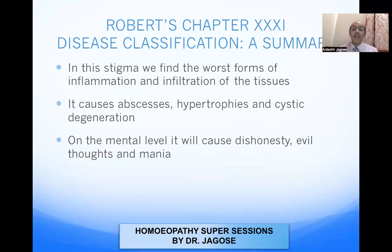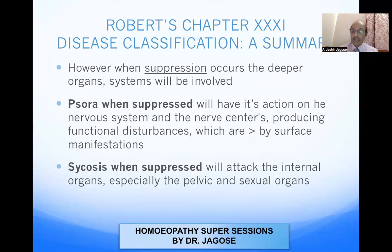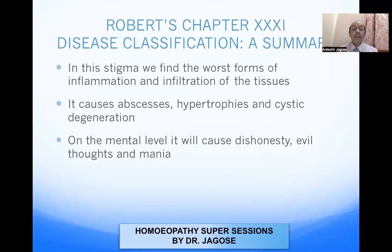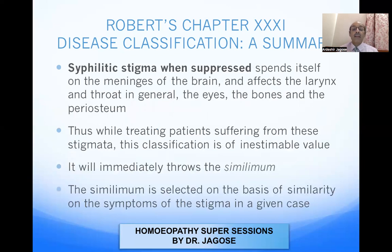In the Sycotic stigma, we find the worst forms of inflammation and infiltration of the tissues. It may cause abscesses, hypertrophies, and cystic degeneration. On the mental level, it will cause dishonesty, evil thoughts, and mania. The Syphilitic stigma, when suppressed, spends itself on the meninges of the brain, affects the larynx and throat in general, the eyes, the bones, and the periosteum.